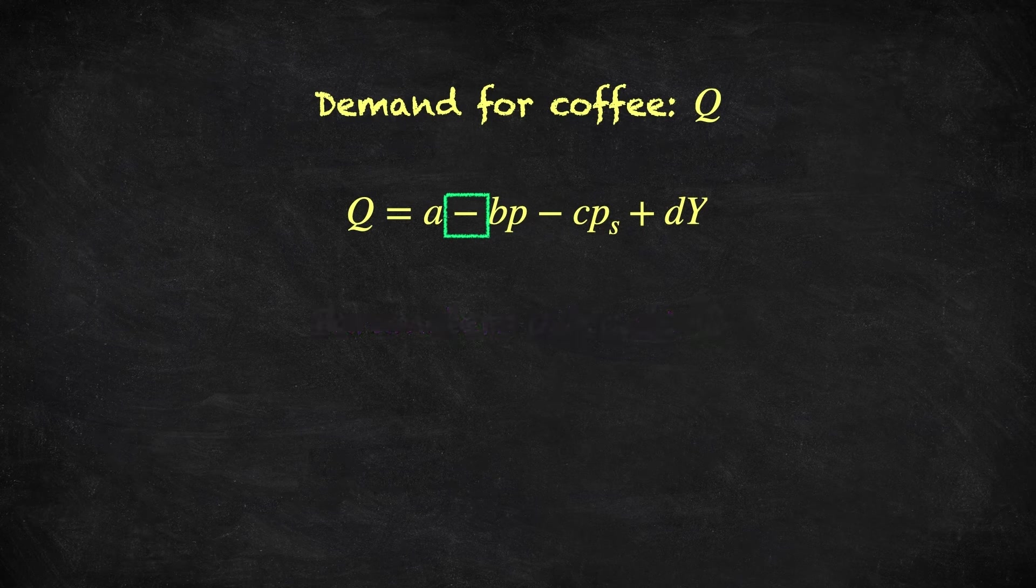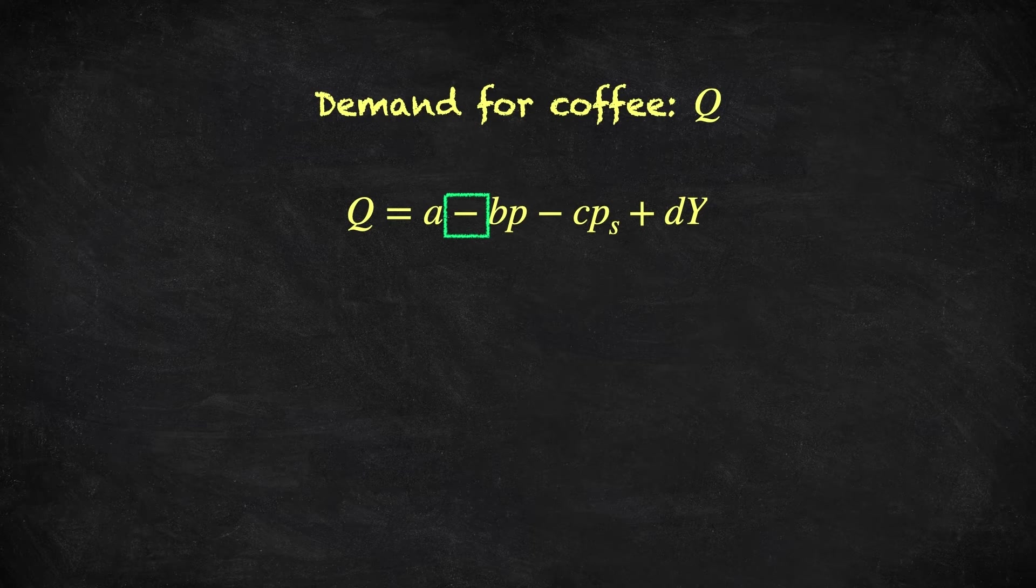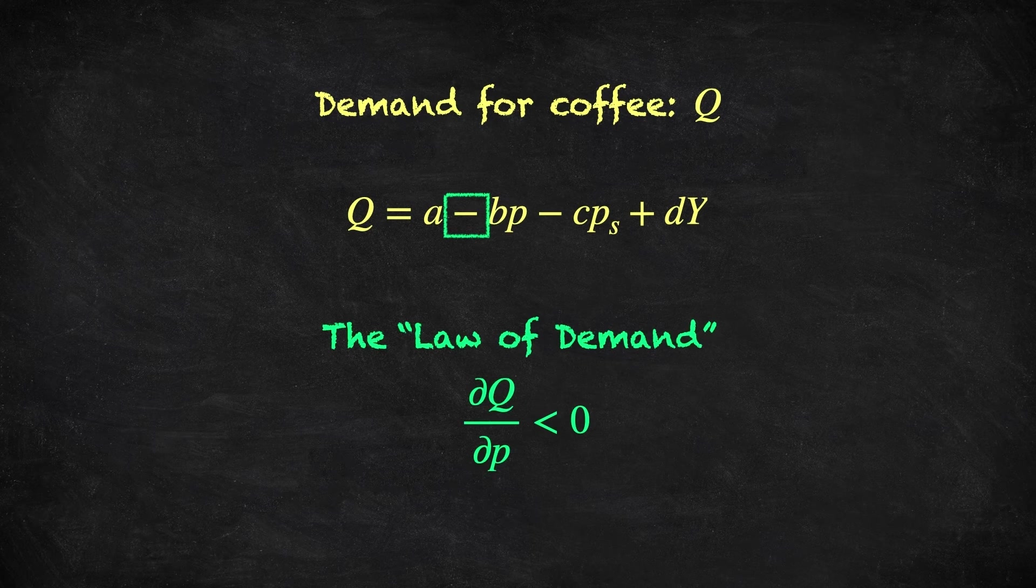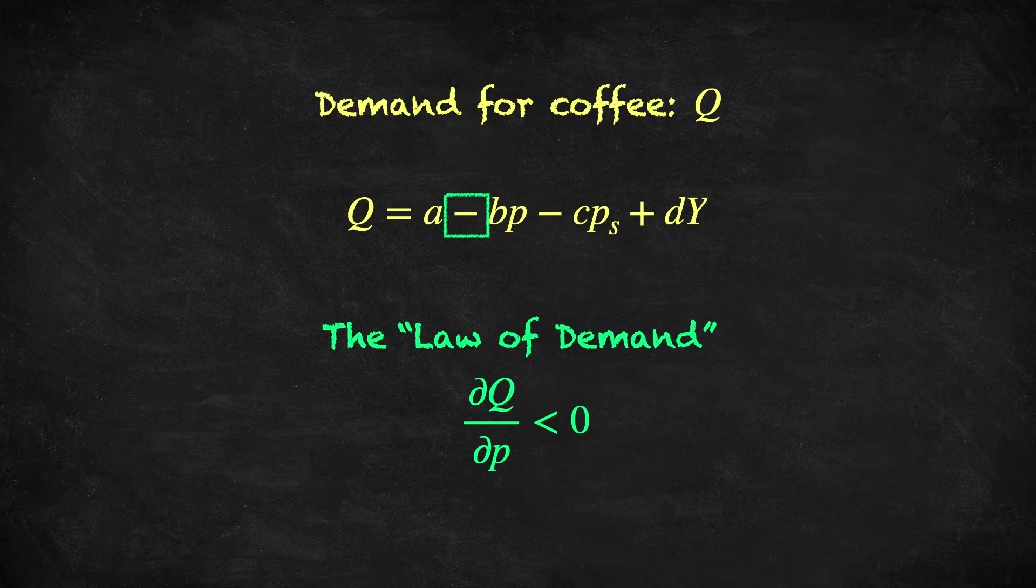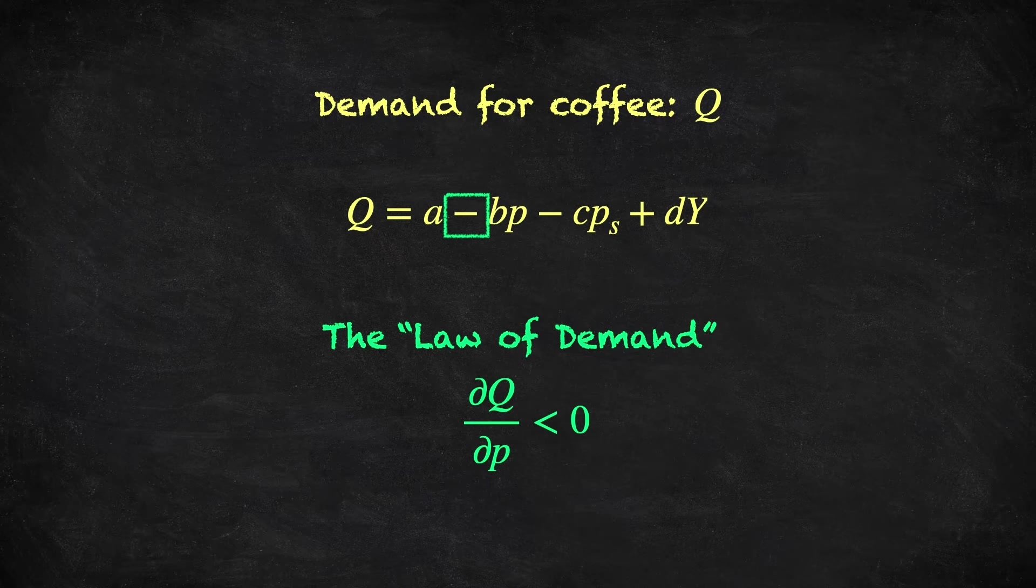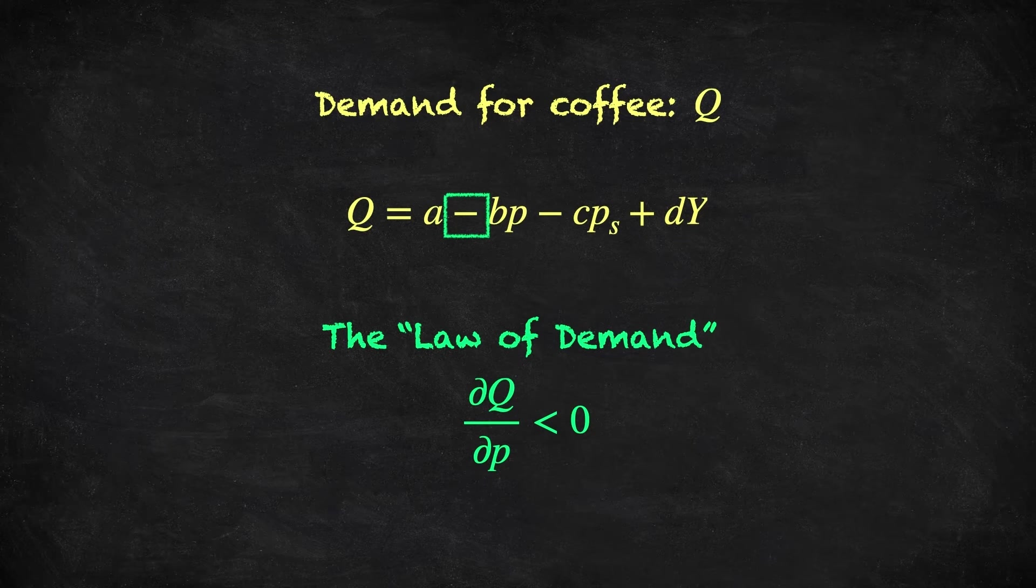So, if the price goes up and everything else stays constant, then demand goes down. This is in accordance with something called the Law of Demand, which claims that changes in demand are negatively related to changes in a good's own price, holding everything else constant. To express this conveniently in mathematical notation, we can write that the partial derivative of demand with respect to the good's price is negative.